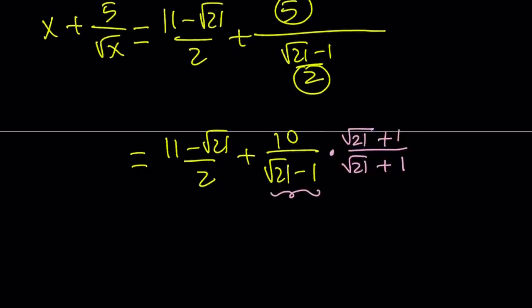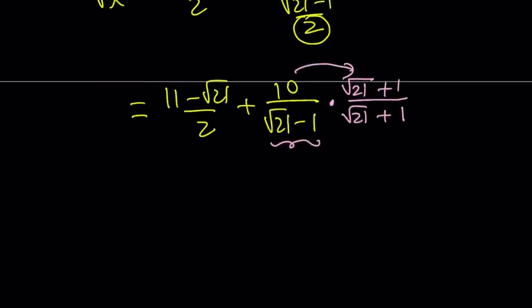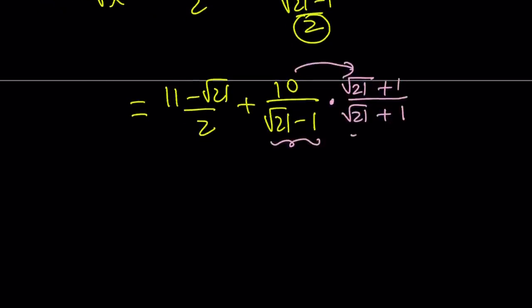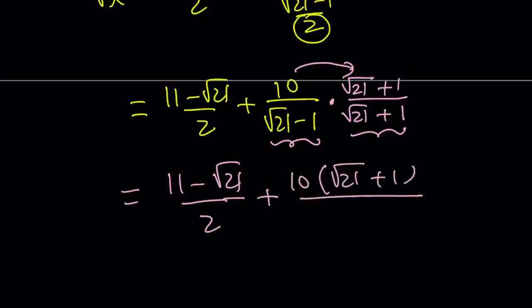And now, this is just going to stay as is. I'm not going to distribute it. Or maybe I will. It depends. But when you multiply these two together, you're going to get 10 times the square root of 21 plus 1 divided by 21 minus 1, which is going to be 20.